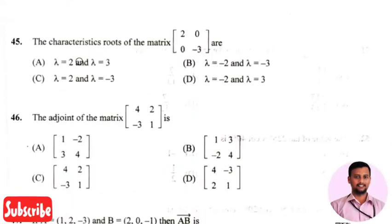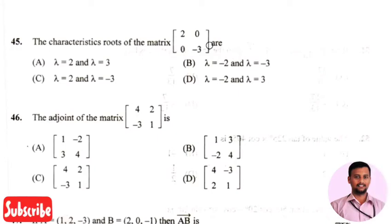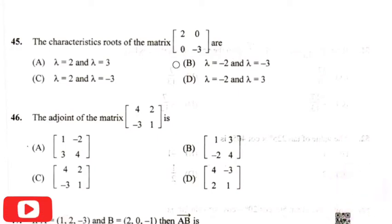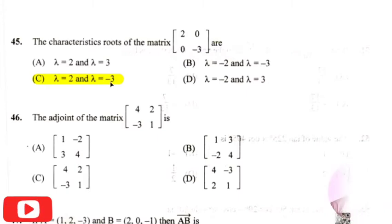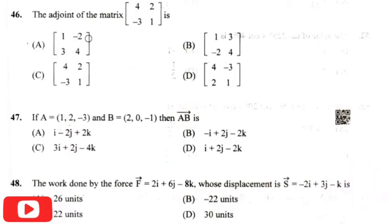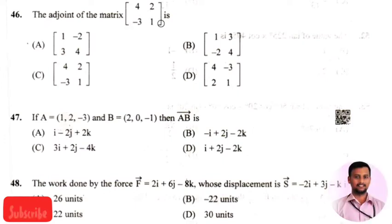The next question is the characteristic roots of the matrix two, zero, zero, minus three — the right answer is option three, that is lambda equals two and lambda equals minus three. The next question is the adjoint of matrix four, two, minus three, one — the right answer is option one, that is one, minus two, three, four.